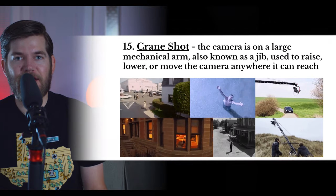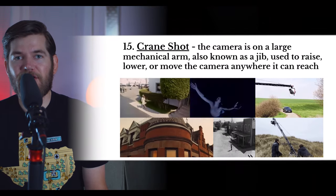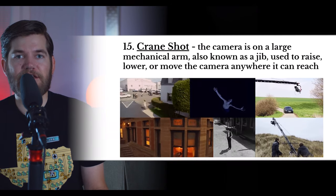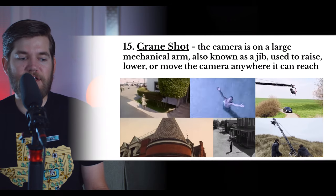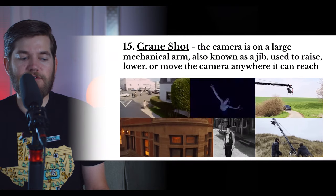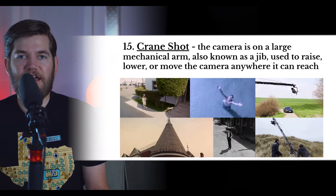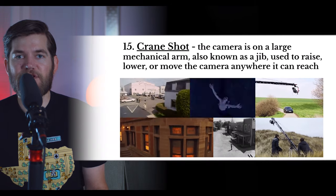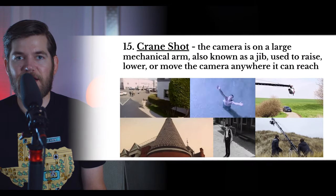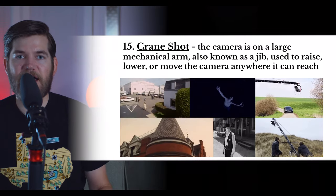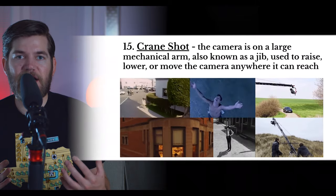Next up we have the crane shot. If you're familiar with a construction crane, those were the type of cranes used in the earliest crane shots. Nowadays we have special cranes designed specifically for camera operators. The camera is on a large mechanical arm, also known as a jib, used to raise, lower, or move the camera anywhere the crane can reach. Crane shots can get low to the ground and raise high up in the air, but are limited by the size of the crane.